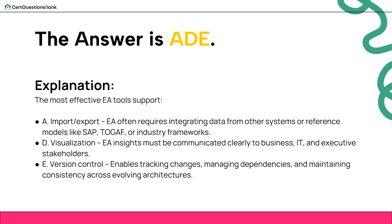The answers are A, D, and E. A — Import/export: EA often requires integrating data from other systems or reference models like SAP, TOGAF, or industry frameworks. D — Visualization: EA insights must be communicated clearly to business, IT, and executive stakeholders. E — Version control enables tracking changes, managing dependencies, and maintaining consistency across evolving architectures.